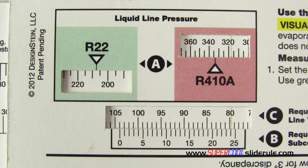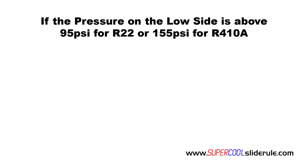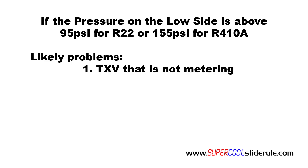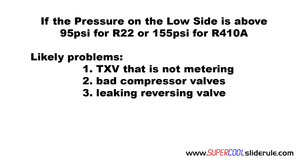This should be your discharge pressure of the unit. If the pressure is higher than this, the likely problems are a restriction at the metering device or an overcharged unit. If the pressure is lower than this, check the pressure on the low side, also referred to as the suction side of the compressor. If the pressure on the low side is above 95 psi for R22 or 155 psi for R410A, the likely causes are a TXV that is not metering, bad compressor valves, or a leaking reversing valve if so equipped.